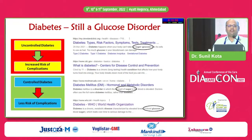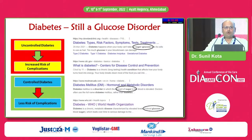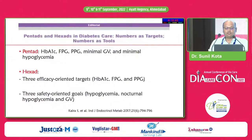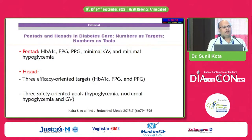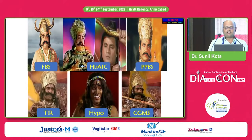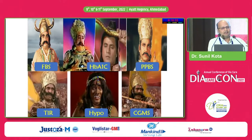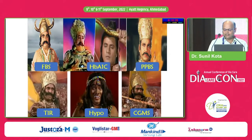Diabetes is a disorder of glucose, we all know that. With uncontrolled diabetes the risk of complications goes up and we have ample evidence to suggest that with decreasing glucose we can reduce the risk of complications. There are targets — fancy terms like HbA1c, fasting, PPBS, glycemic variability, hypoglycemia and nocturnal hypoglycemia.